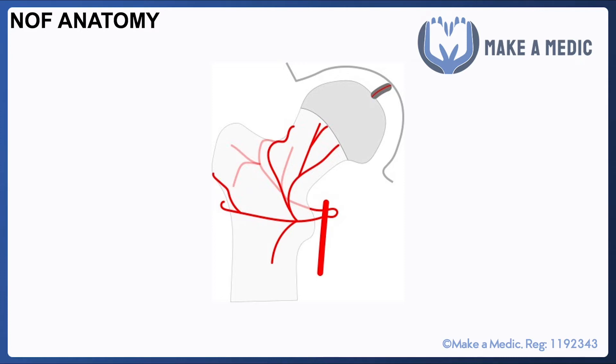The way that the fracture is managed is very much dependent on the anatomy of the head and neck of the femur and also the nature of the fracture itself. We're just going to go through a little recap of neck of femur anatomy, and the most important thing to understand about the neck of the femur is how the blood supply works.